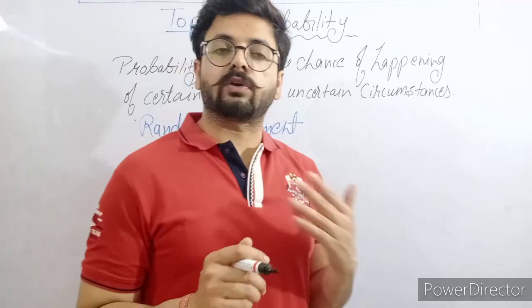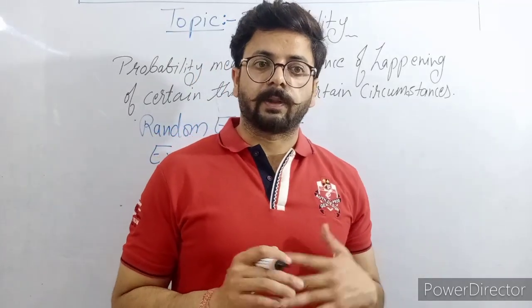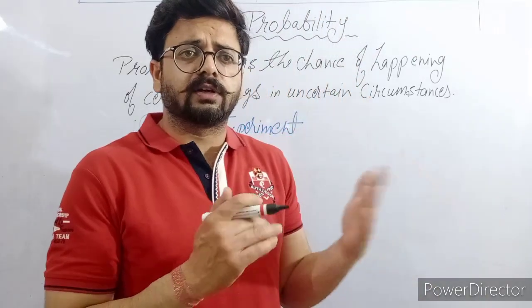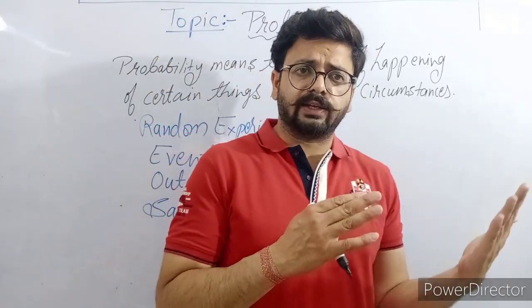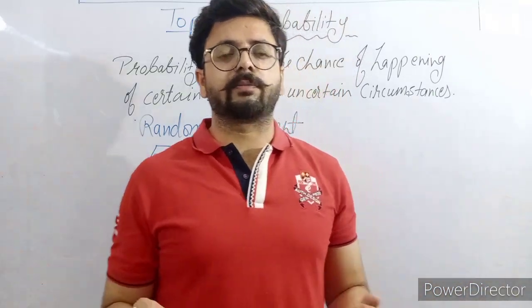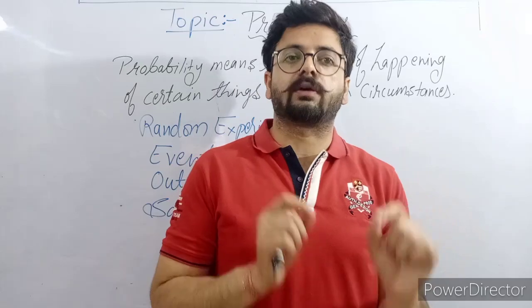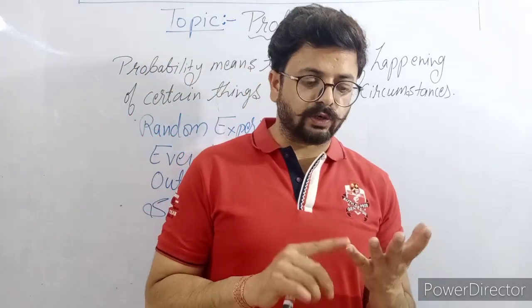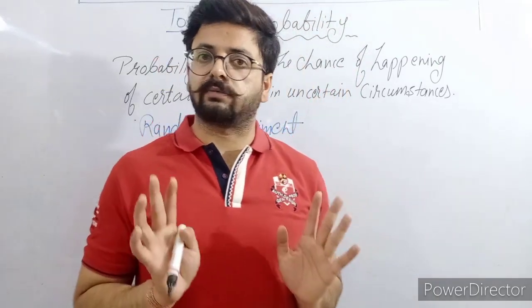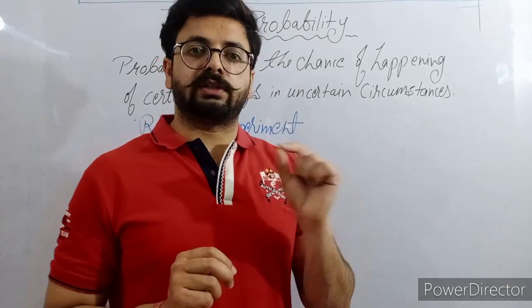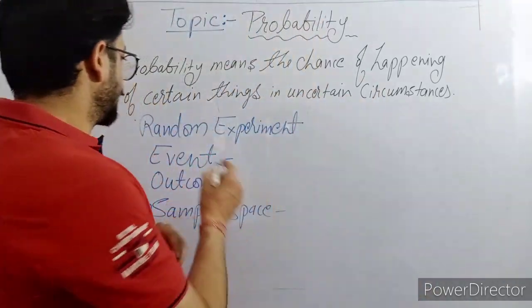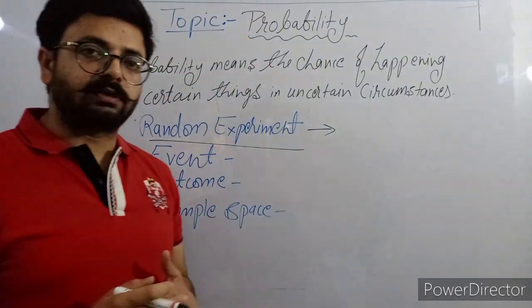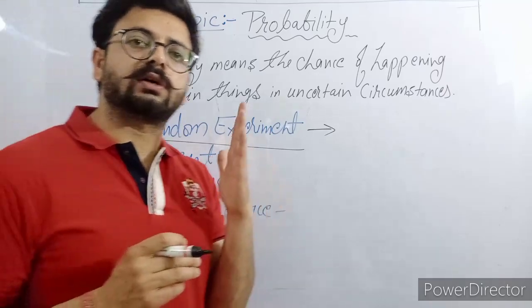For example, whenever we toss a coin, we know two outcomes will come — head or tail — but we cannot predict what will actually come. We know all the outcomes but don't know exactly which one will occur. Similarly, when throwing a die, we know one through six can come, but we don't know exactly what result will appear. That is a random experiment — any experiment whose total outcomes we know but whose result we cannot predict.